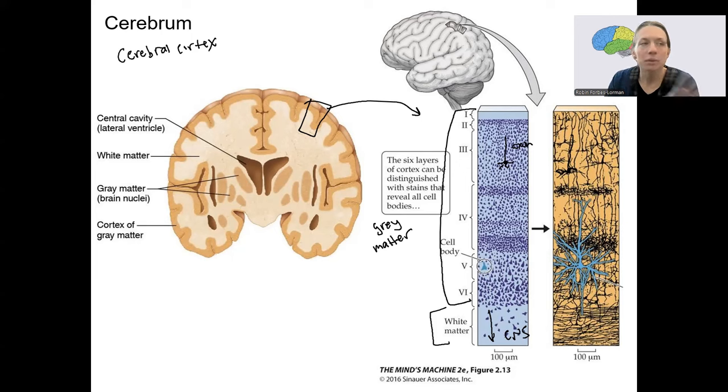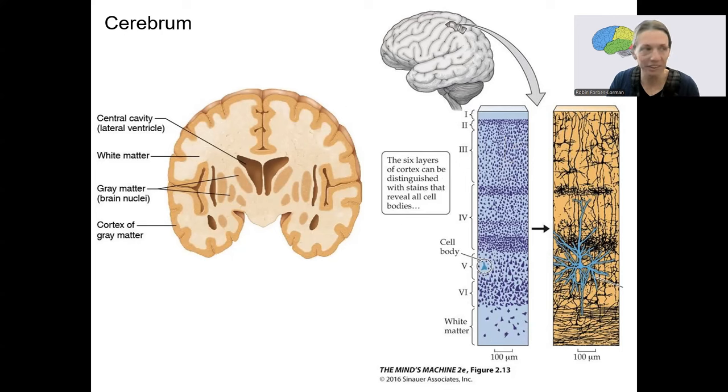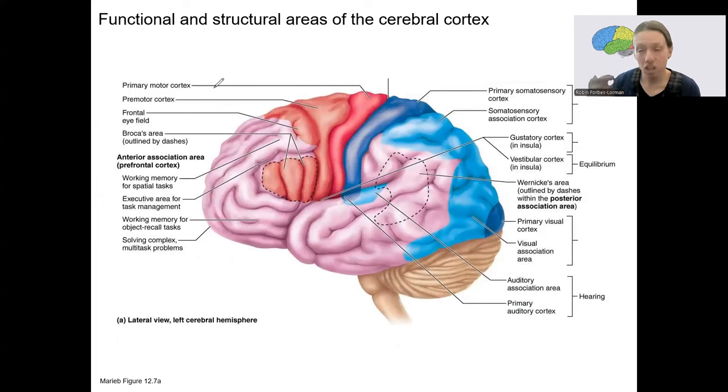So then throughout the brain, the cerebral cortex has a different function depending on where we are. So you've probably seen a kind of a map like this, tons of different specified areas. We're not going to learn all of them in this class. Here is our central sulcus. And just in front of that, there's the motor cortex, the primary motor cortex. So involved in motor control, conscious motor control.